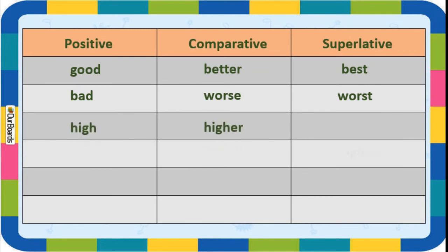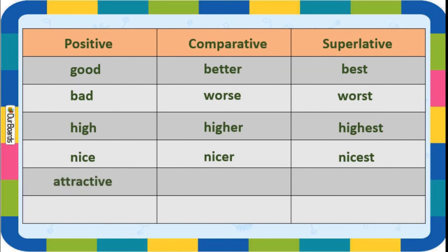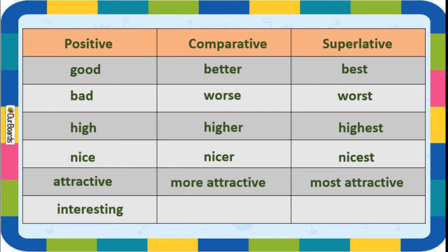High - higher - highest. Nice - nicer - nicest. These are small adjectives, so we add '-er' for comparative and '-est' for superlative. Attractive - a longer adjective - so we use 'more attractive' and 'most attractive'. Interesting - a long adjective - 'more interesting' and 'most interesting'.